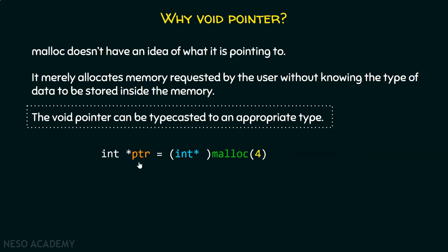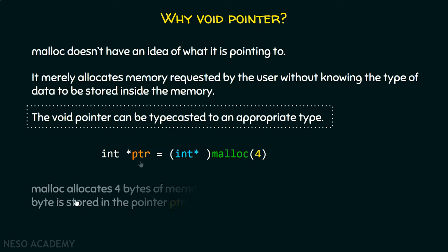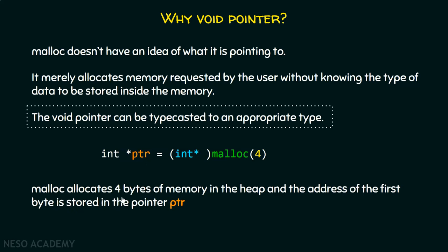It could be any name — doesn't matter — but here my choice is ptr. Malloc allocates 4 bytes of memory in the heap and the address of the first byte is stored in the pointer ptr. The address of the first byte is returned by malloc and stored within this ptr pointer. From there, we can access the rest of the bytes.